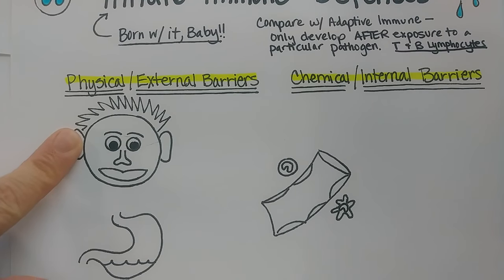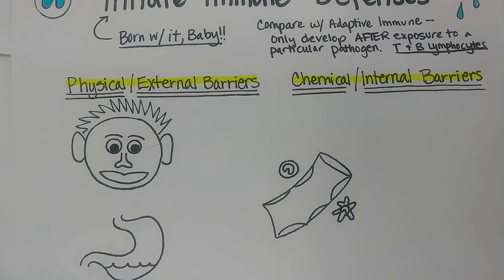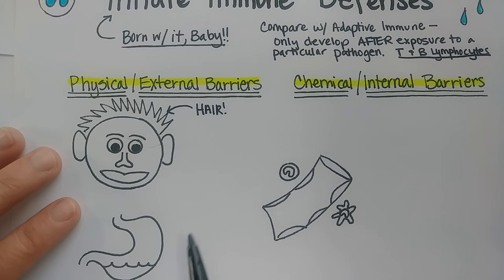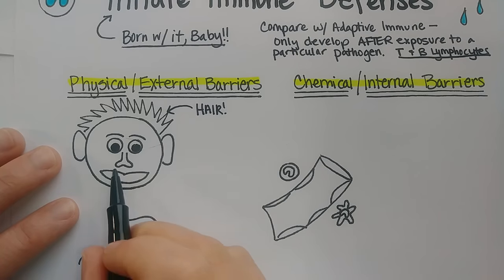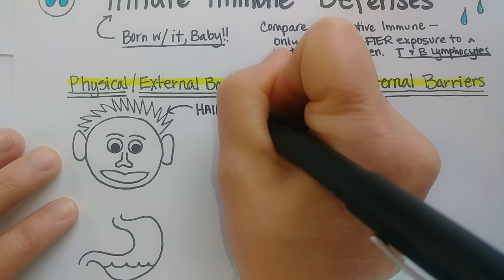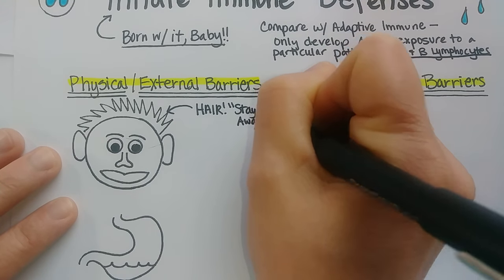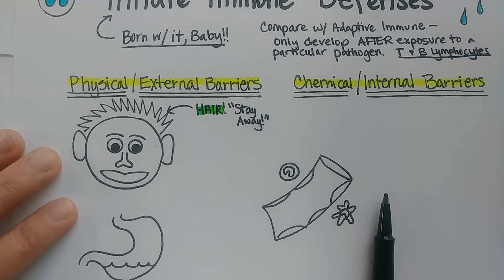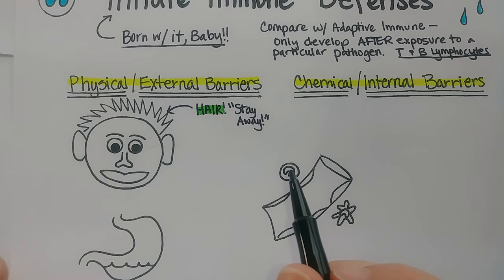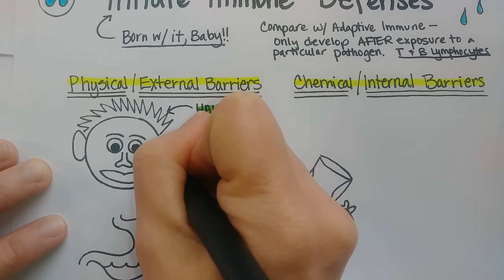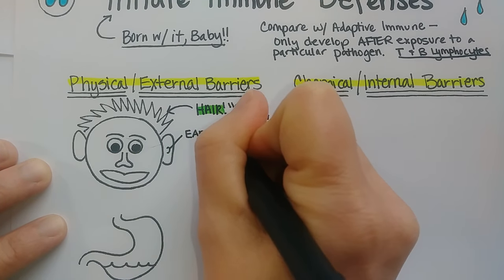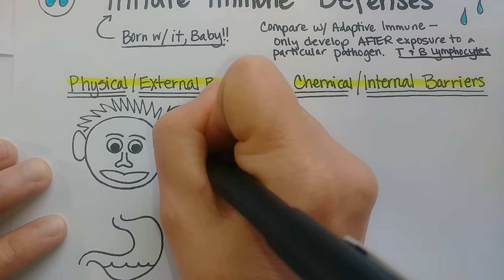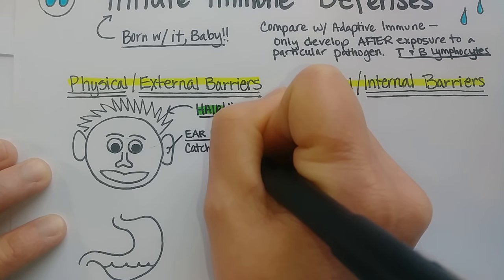Let's start with the physical and external barriers. The first one is hair. Your hair is important to prevent infection — whether it's the hair on your head, armpits, pubic hair, or the hair in your nose or ears. It all helps keep microbes away, so they might not even get to the surface of your skin. The next physical barrier is earwax. Anytime you have a wax or a mucus, it's going to be beneficial in trapping and preventing pathogens from getting inside — it catches and traps pathogens.